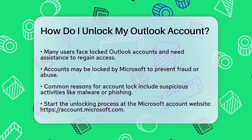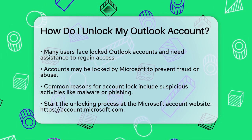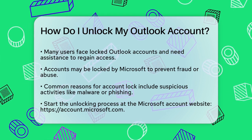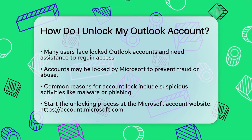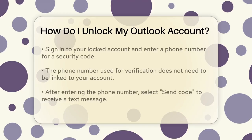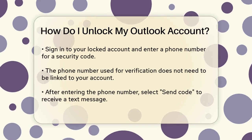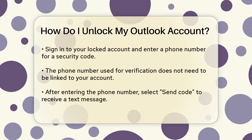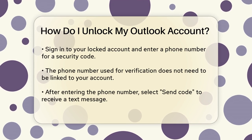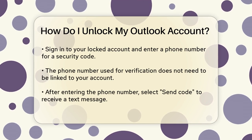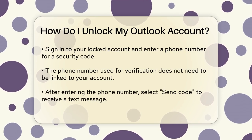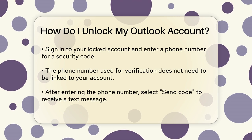To unlock your Outlook account, start by going to the Microsoft account website at account.microsoft.com. Sign in to your locked account, and you'll be prompted to enter a phone number to receive a security code via text message. This phone number doesn't have to be associated with your account, so you can use a friend's or family member's phone if needed.